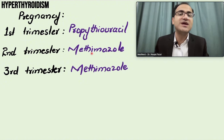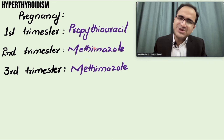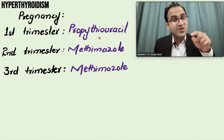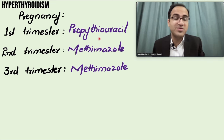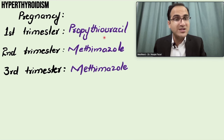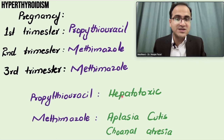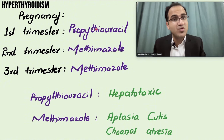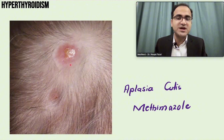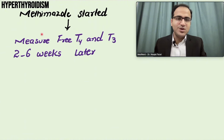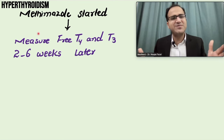In the second and third trimesters, you can shift the patient back to methimazole. Why shift back? Because propylthiouracil carries a black box warning - it is a hepatotoxic drug, and you cannot use it for a longer period of time. That is why propylthiouracil is not the first-line drug for hyperthyroidism; it is only used when methimazole cannot be given, such as in first-trimester pregnancy or thyroid storm. Methimazole causes aplasia cutis and choanal atresia, shown in the picture of an infant with aplasia cutis.